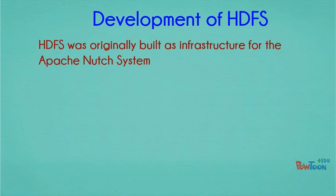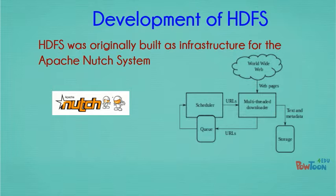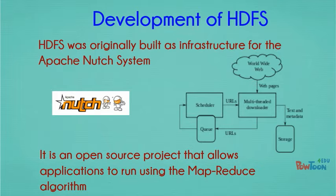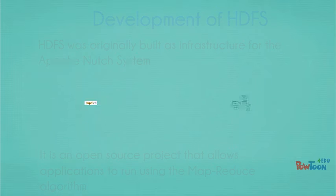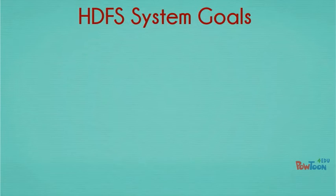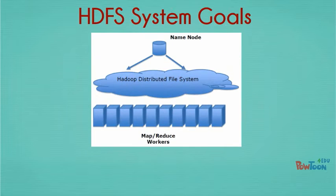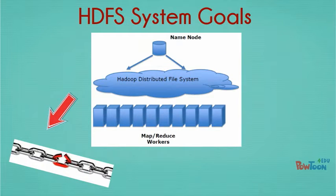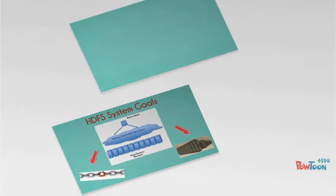HDFS was originally built as infrastructure for the Apache Nutch system, a web search engine project created to assist the Apache program with its processing needs. The system is designed to run on commodity hardware, which is affordable and accessible for users. It is an open source project that allows applications to run using the MapReduce algorithm. Most notably, it has a high fault tolerance level by detecting faults and applying quick automatic recovery, and it can reliably store and process large amounts of data.